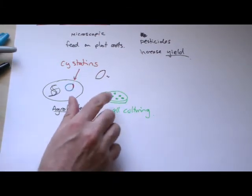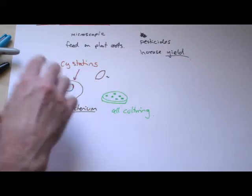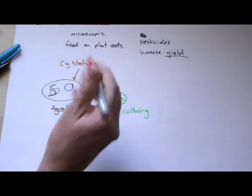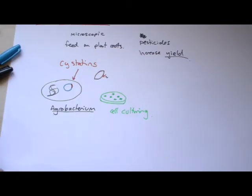So that when the plant grew, it produced more of these cystatins, and it produced them in its roots. And now its roots were also too difficult for the nematodes to eat.